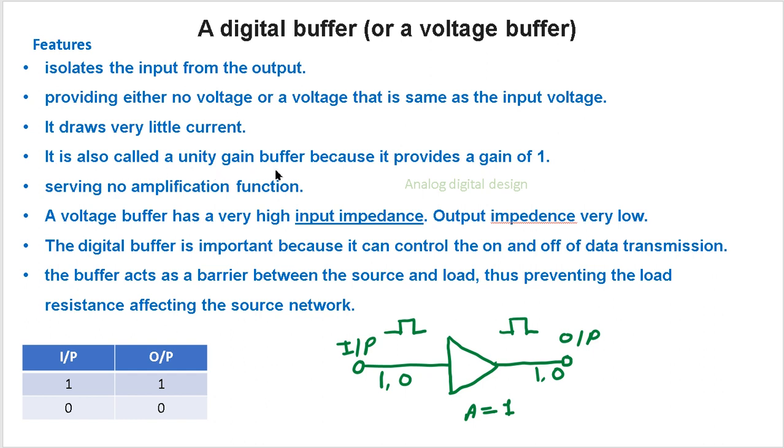It is also called a unity gain buffer because it provides a gain of 1, serving no amplification function.